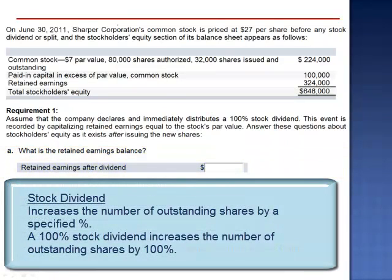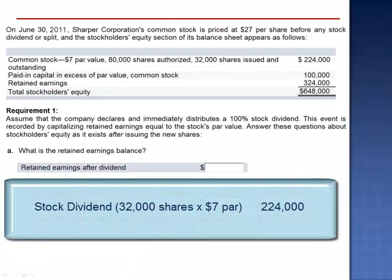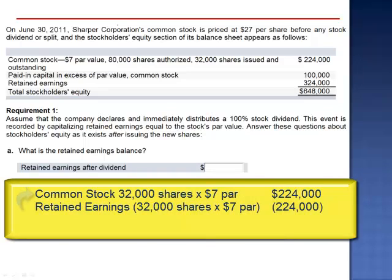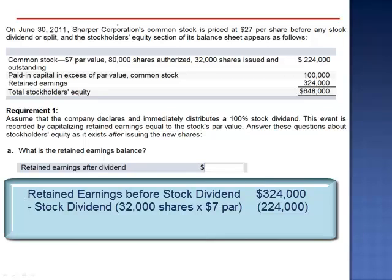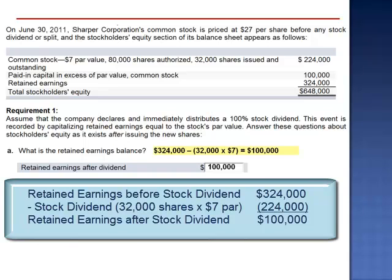A 100% stock dividend increases the number of shares by 100%. 32,000 shares had previously been issued and outstanding, so the stock dividend is an additional 32,000 shares. The par value of 32,000 shares, $224,000, will be transferred from retained earnings to common stock. Retained earnings will start at $324,000, we subtract $224,000, dropping the balance in retained earnings to $100,000 after the dividend.